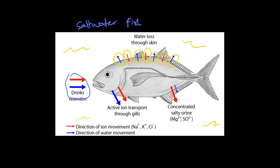These fish don't need to retain extra salt because it's readily available in their environment — the opposite situation to freshwater fish. They produce concentrated, salty urine, which shows they need to get rid of the salts they're constantly taking in. Since they don't have access to freshwater, they conserve water by producing this concentrated urine, which the kidney is responsible for.